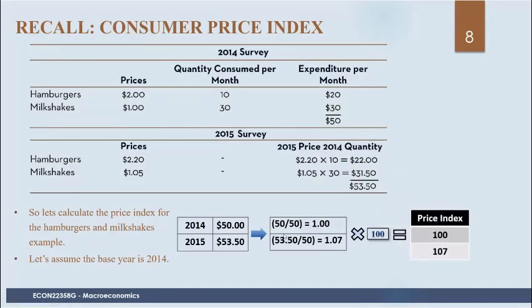When you see consumer price indices — for example on Statistics Canada — they'll be in this format. They could be less than 100, like 58.2, then go up to 100 and beyond, like 101.1 or 103. They're based on the cost of baskets of goods and are all calculated relative to a particular base year.